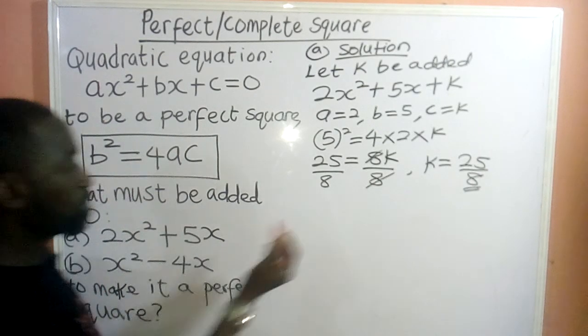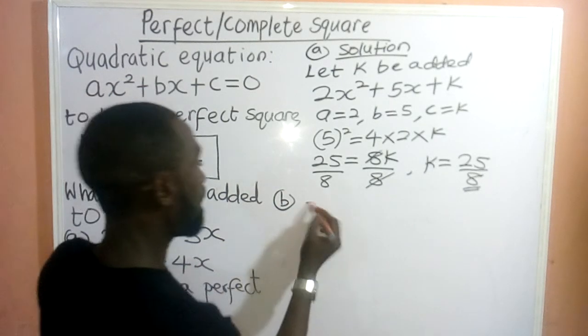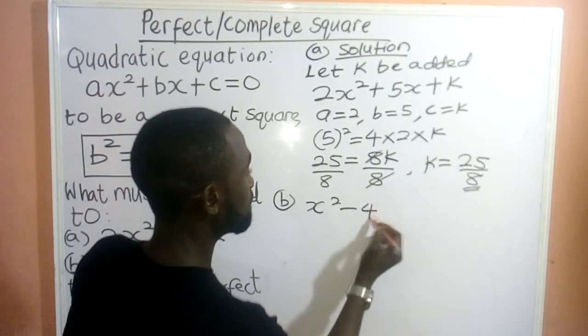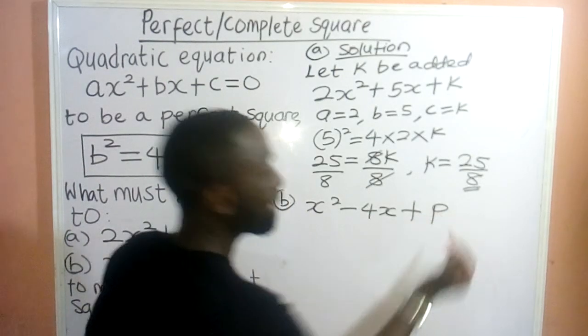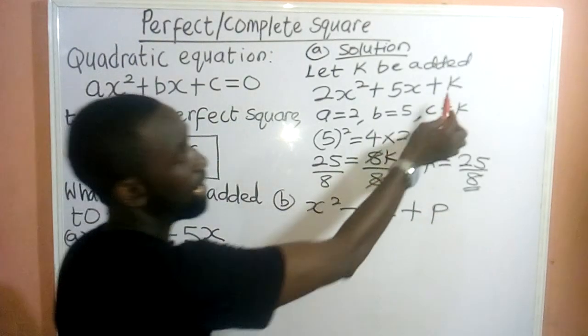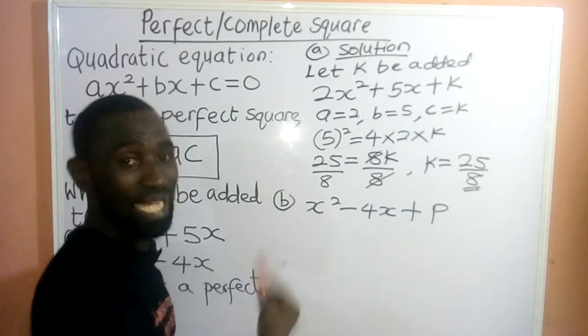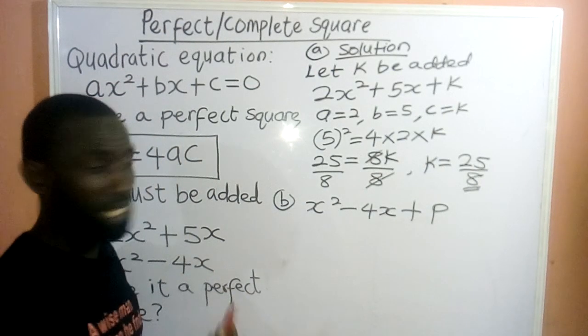We have the big part of the question. We have x² - 4x. What do you want us to add? Let us add P. We can add any variable. Here, I added k. Here, I'm adding P. We can add any variable to make it a perfect square.